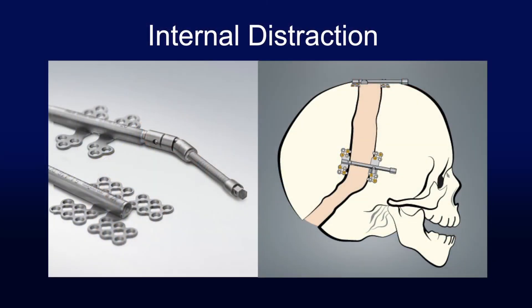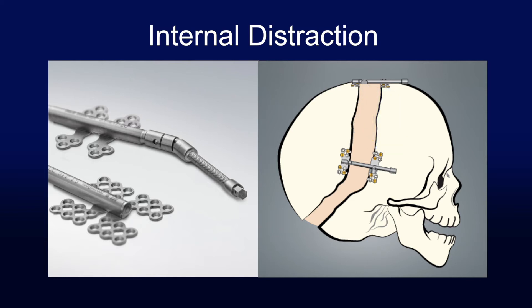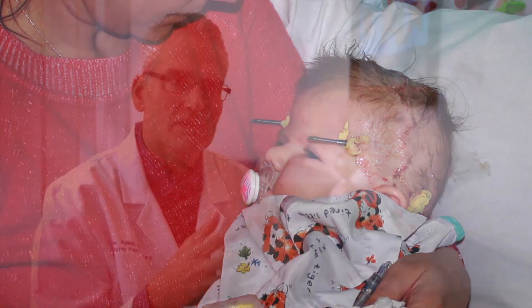We go in as surgeons under anesthesia, create a controlled fracture, and then put some type of device across that fracture. That device is a mechanical device that actually stretches the fracture line open a little bit, very slowly — about a millimeter a day. Each day we open that fracture line by a millimeter, the body responds that night and heals it up. The next day we turn the distraction device again, open the fracture line again, and the body heals it again. We do that sequentially and very slowly, actually expanding the bone at the fracture site. The patient themselves creates their own bone graft exactly where we want it.